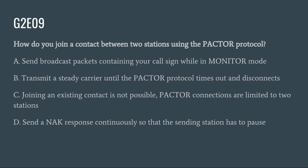G2E09: How do you join a contact between two stations using the PACTOR protocol? A. Send broadcast packets containing your call sign while in monitor mode. B. Transmit a steady carrier until the PACTOR protocol times out and disconnects. C. Joining an existing contact is not possible — PACTOR connections are limited to two stations. Or D. Send a NAC response continuously so that the sending station has to pause. The correct answer is C: joining an existing contact is not possible; PACTOR connections are limited to two stations.